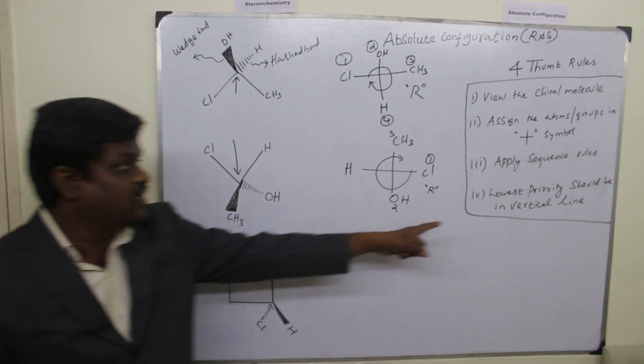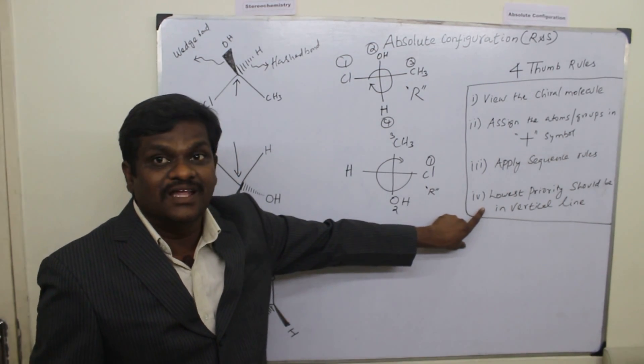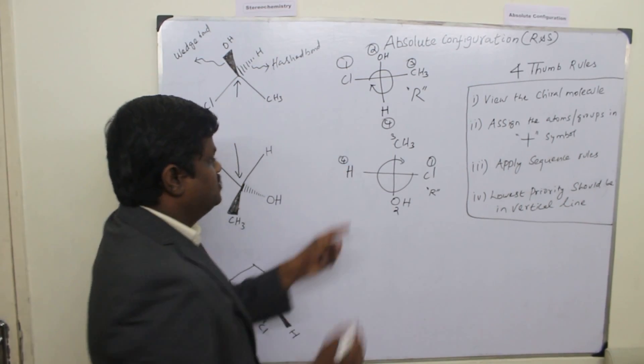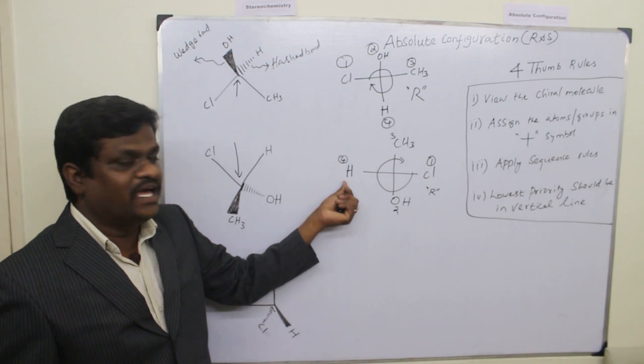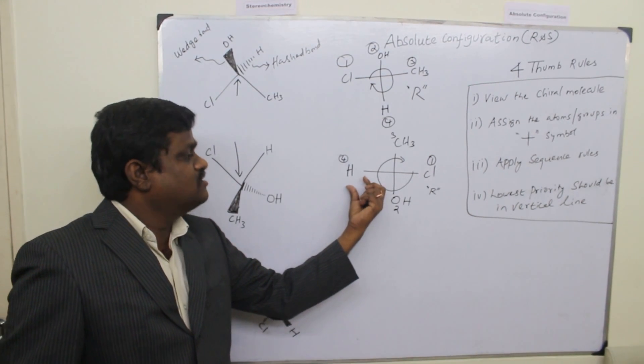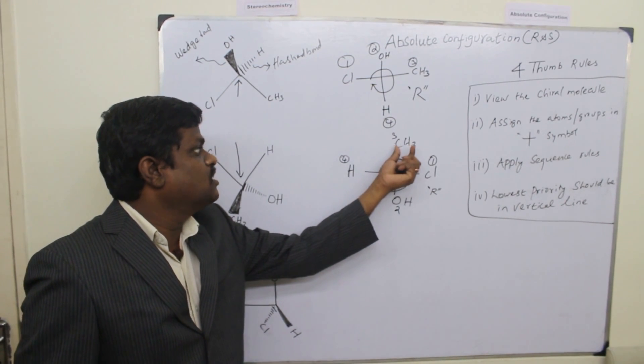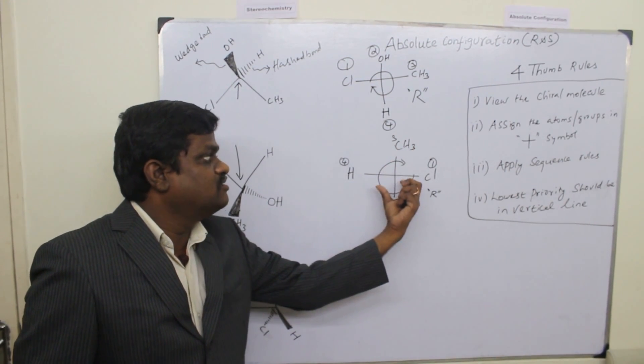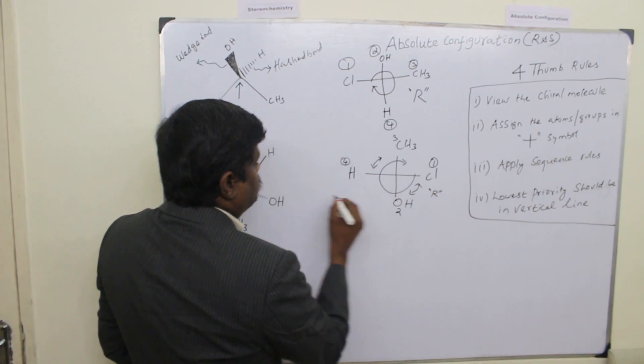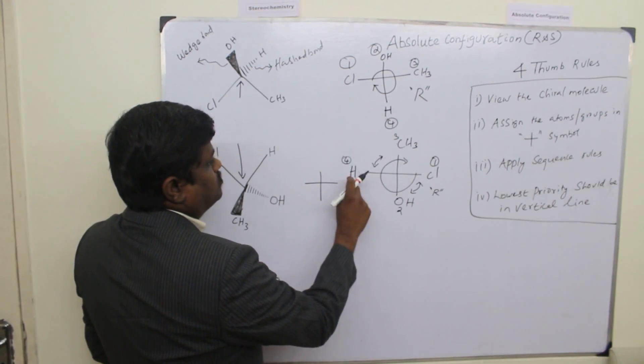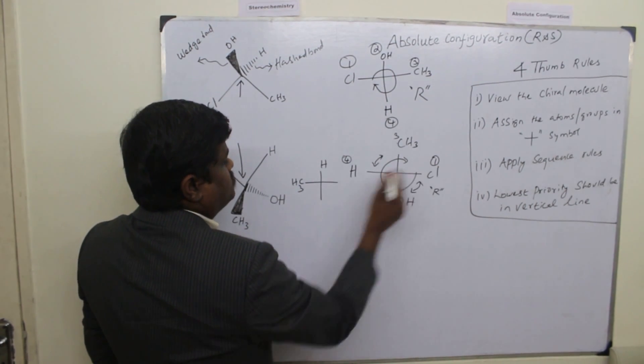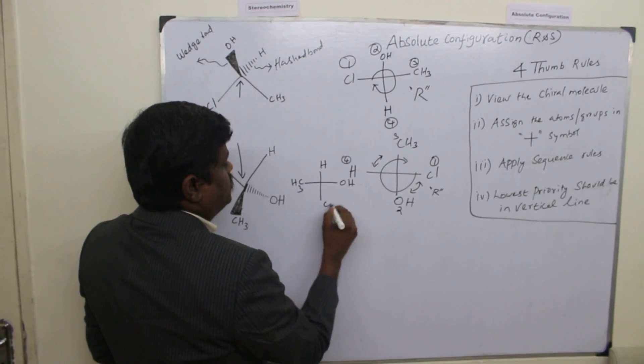Now what is the final rule? The lowest priority should be in the vertical line. You see that lowest priority is hydrogen. But it is not in the vertical line. It is in the horizontal line. So we have to get this one shifted to vertical line by getting double swap. So you can swap like this. So if you swap, what will happen? This hydrogen will go up. This methyl will come down. This OH will go up. And this chlorine will come down.